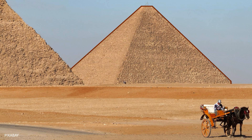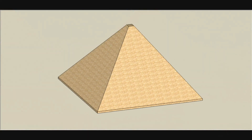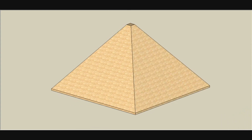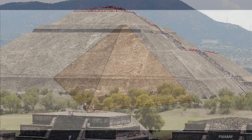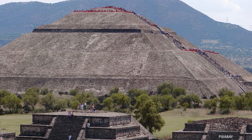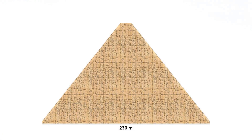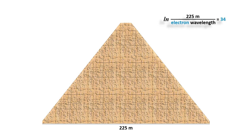Considering only realities, the Great Pyramid is what it is: a square frustum, like many other pyramids around the world, including the great Mexican pyramids. Actually, the length of the base is not 230 meters but 225 meters, like the Pyramid of the Sun in Teotihuacan, Mexico. And it fits perfectly with the 34th power of Euler's number relative to the Compton wavelength of the electron — we write E34 in blue.